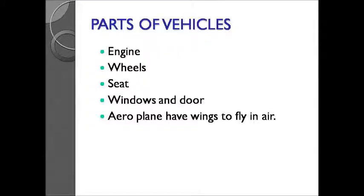Parts of vehicles. A vehicle consists of various parts. Most vehicles run on wheels. They have seats to sit on. Cars, buses, trains, and aeroplanes have windows and doors. Aeroplanes have wings to fly in the air. Some vehicles have engines — an engine makes a vehicle move from one place to another. The main parts of a vehicle are engine, wheel, seat, windows, and doors.